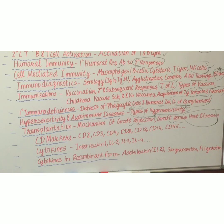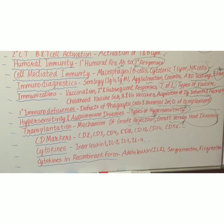The next topics are CD markers — including CD2, CD3, CD4, CD8, CD12, CD14, CD56, and so on — and their functions, which are very important. Next is cytokines, which include interleukins such as interleukin-2, interleukin-3, interleukin-4, and others, as well as cytokines in recombinant form.